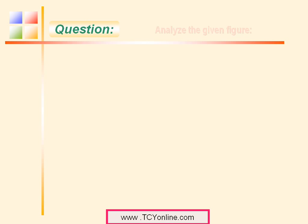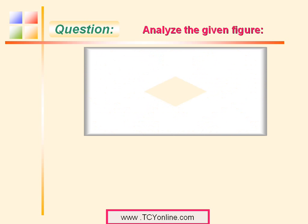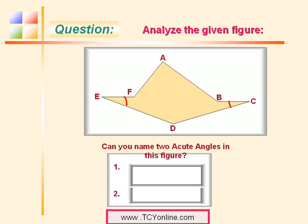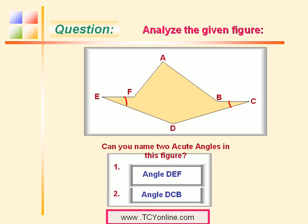Now look at this question. You need to analyze the given figure and name any two acute angles in it. When we look at this figure, we find that angle DEF is an acute angle because it appears to have a measure less than 90 degrees. Similarly, angle DCB also appears to be an acute angle because it has a measure less than 90 degrees. So the two acute angles are angle DEF and angle DCB.